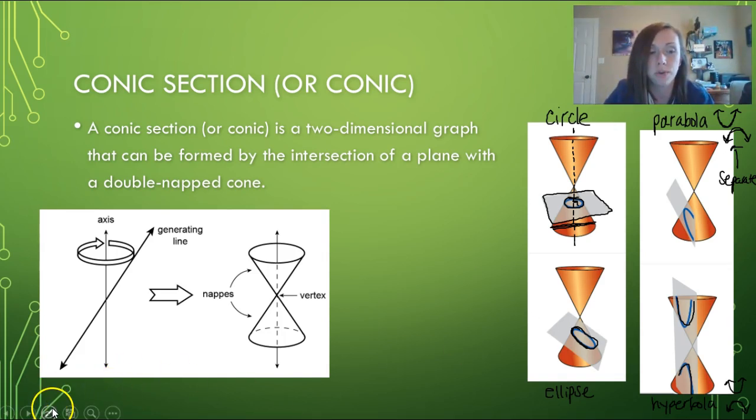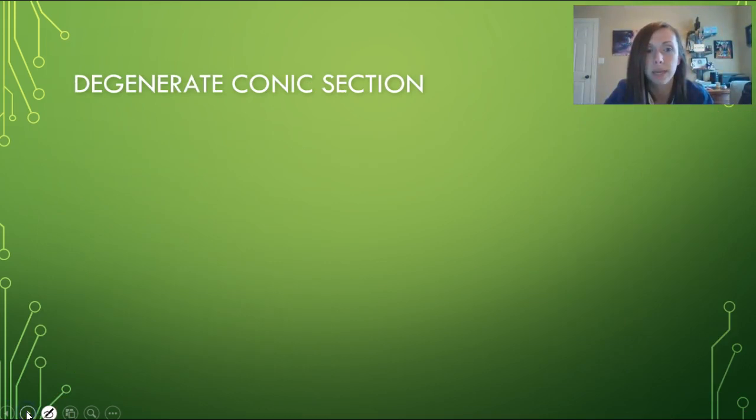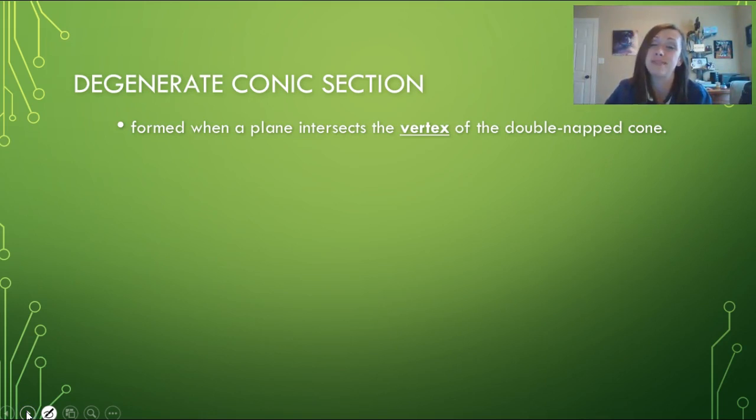There are just a few more to keep in mind. These are called degenerate conic sections. These are formed when a plane intersects the vertex of the double-napped cone.